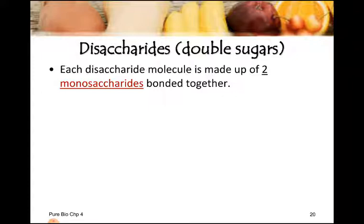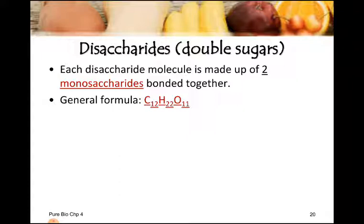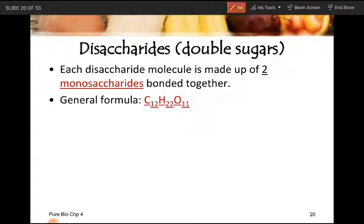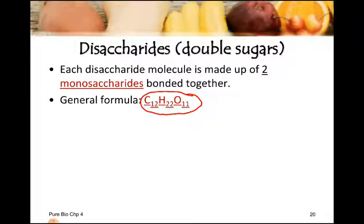Disaccharides are larger size molecules formed by the combination of two monosaccharides. When two monosaccharides join together and form a bond, a bigger size molecule is produced — that is called a disaccharide. The general formula of disaccharides is C12H22O11.